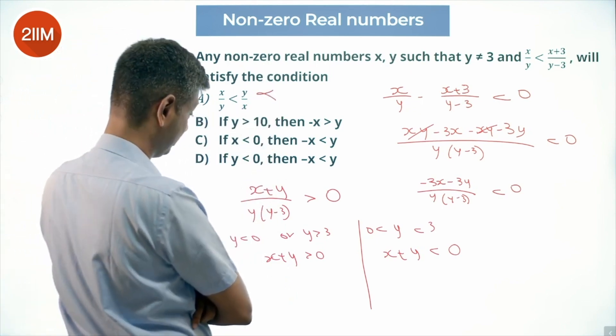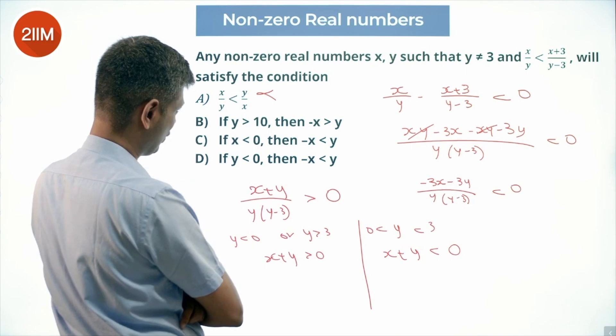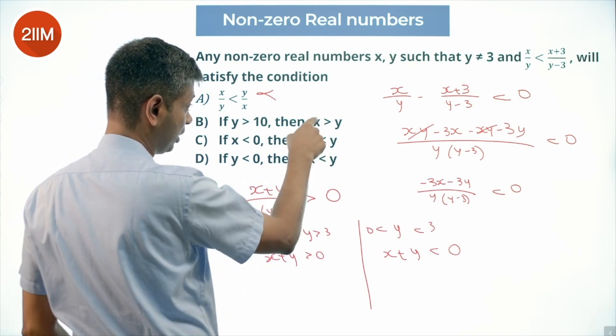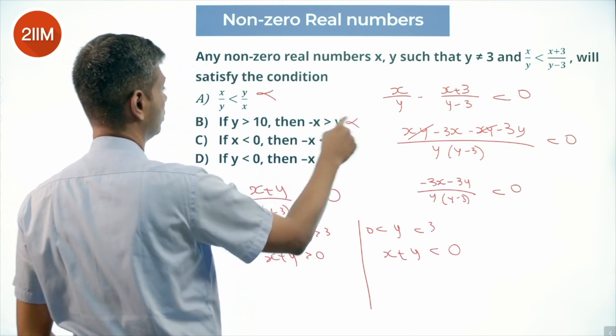If y is greater than 10, then -x is greater than y, x+y less than 0. No, here this will become x+y less than 0, it should be greater than 0, it doesn't work.